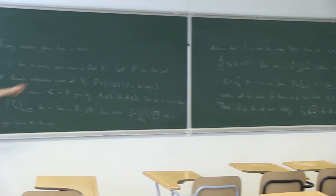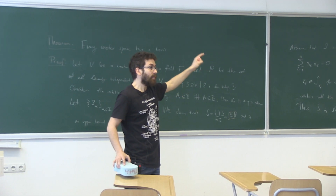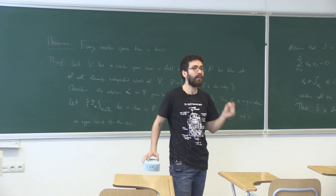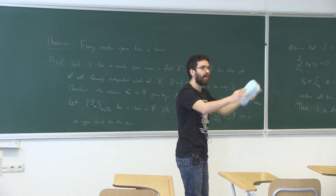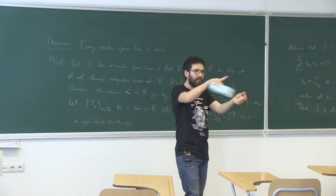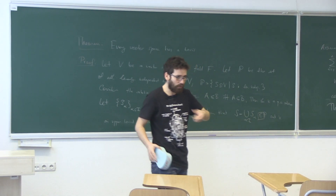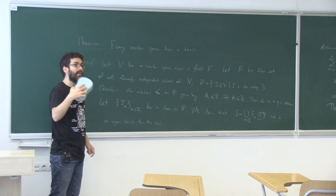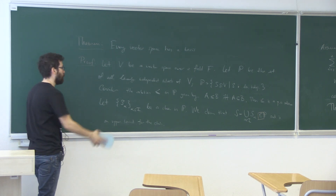Questions? This is a pretty standard application of Zorn's Lemma. When you go home, try to prove that every commutative ring with unity has a maximal ideal, using the exact same strategy: form a partial order where the order relation is inclusion, show the hypothesis of Zorn's Lemma is satisfied, apply Zorn's Lemma, and show the maximal element you get is actually the maximal ideal.